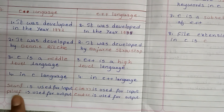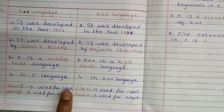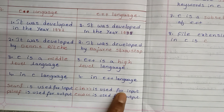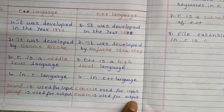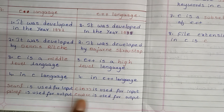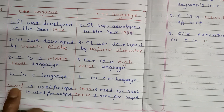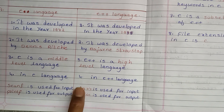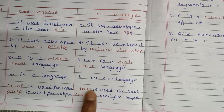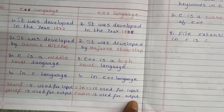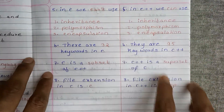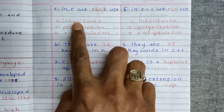In C language, scanf is used for input and printf is used for output. But in C++, cin is used for input and cout is used for output. So both languages differ in their input and output functions.